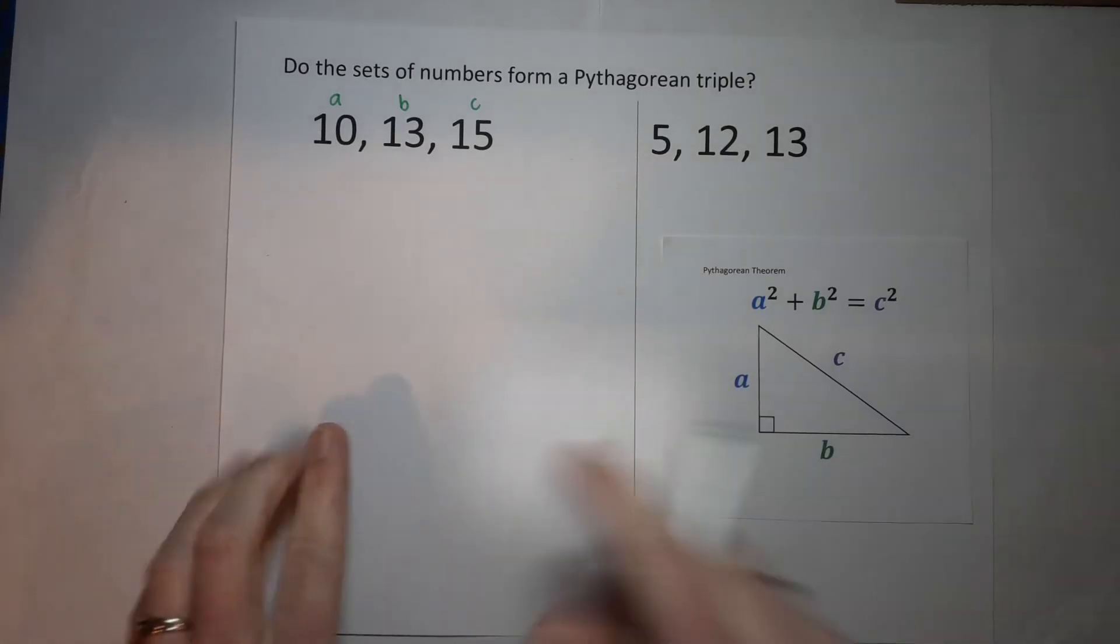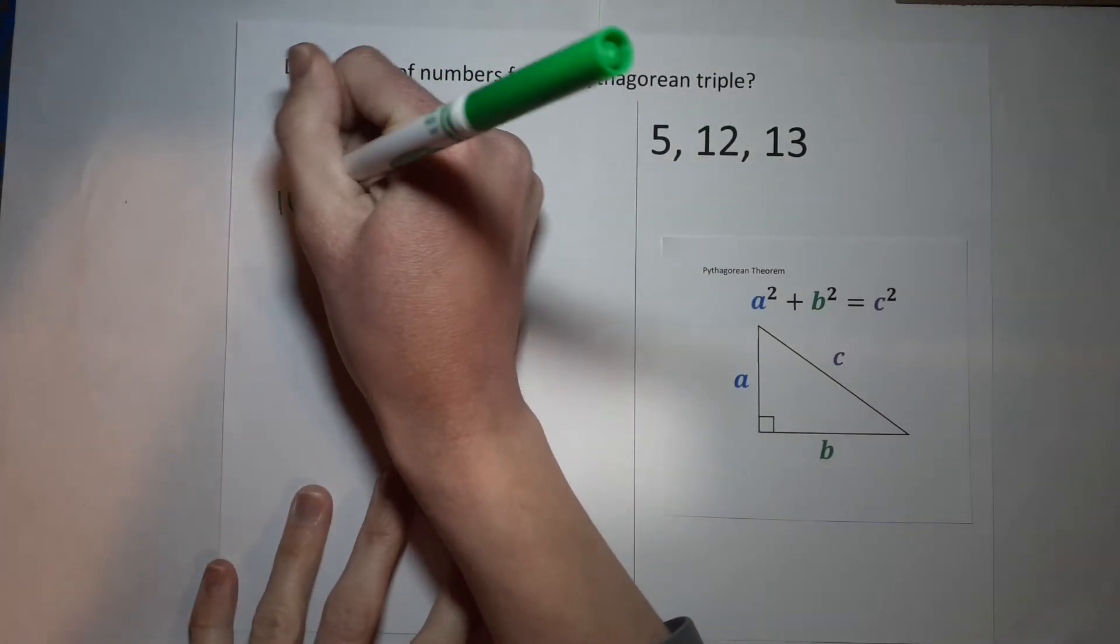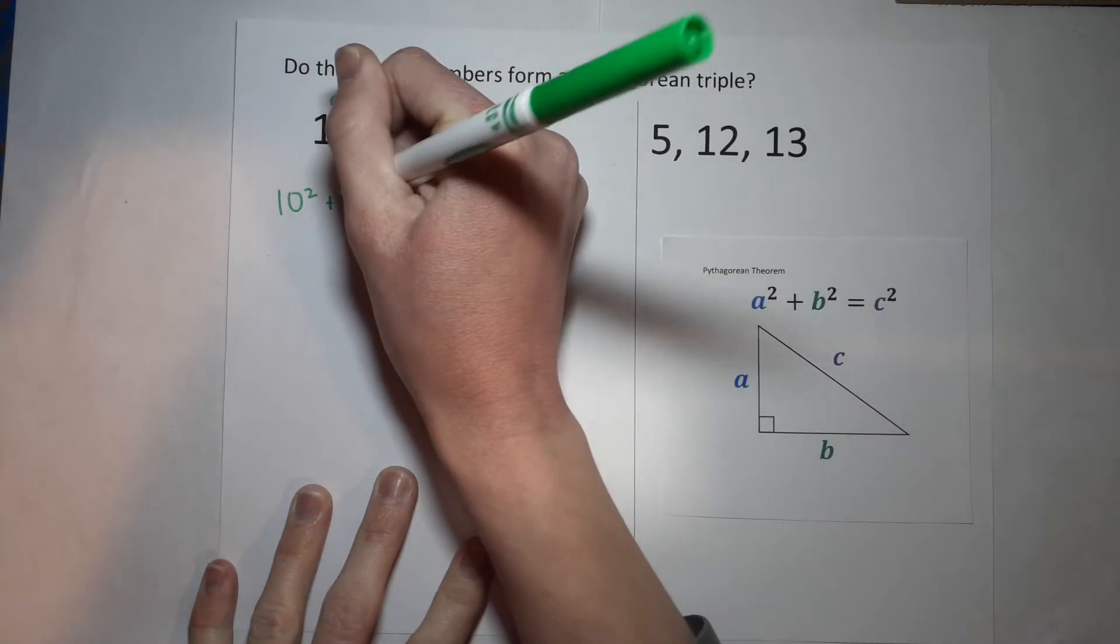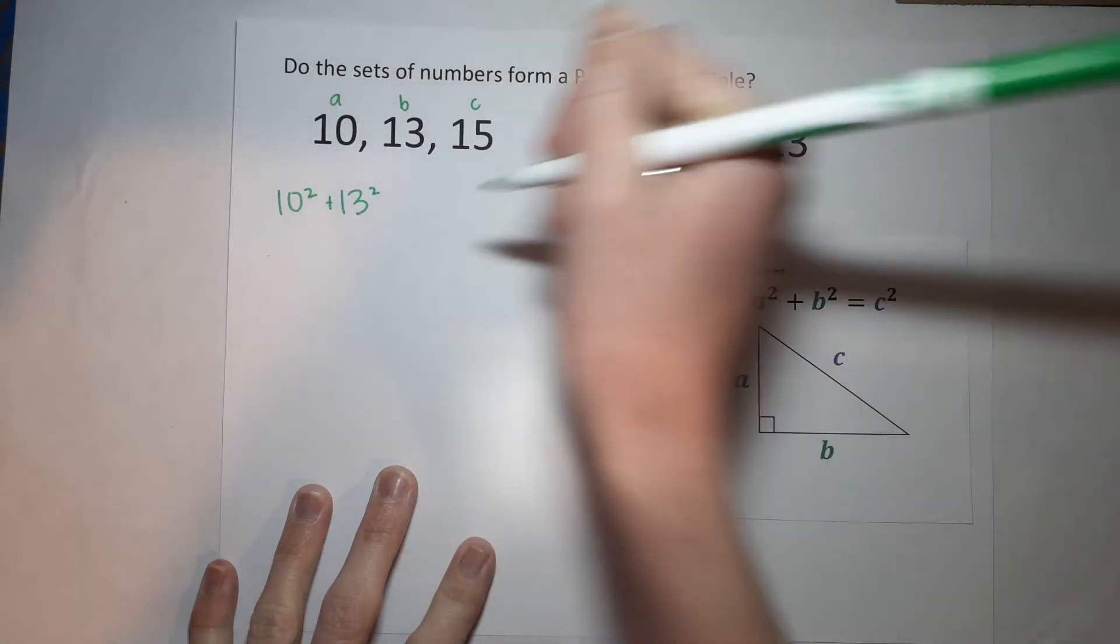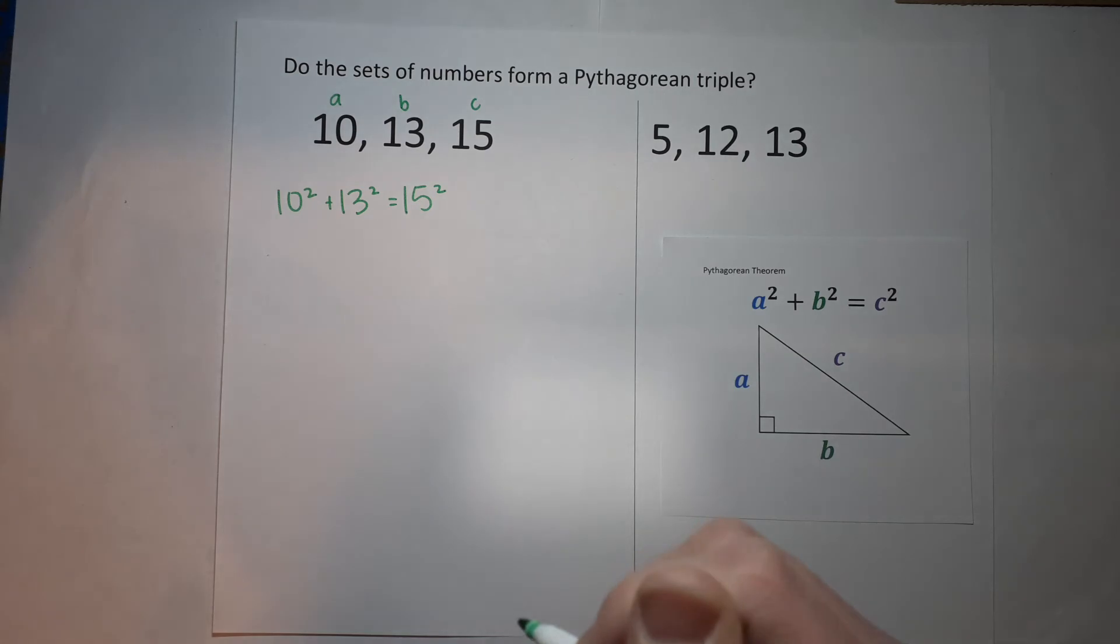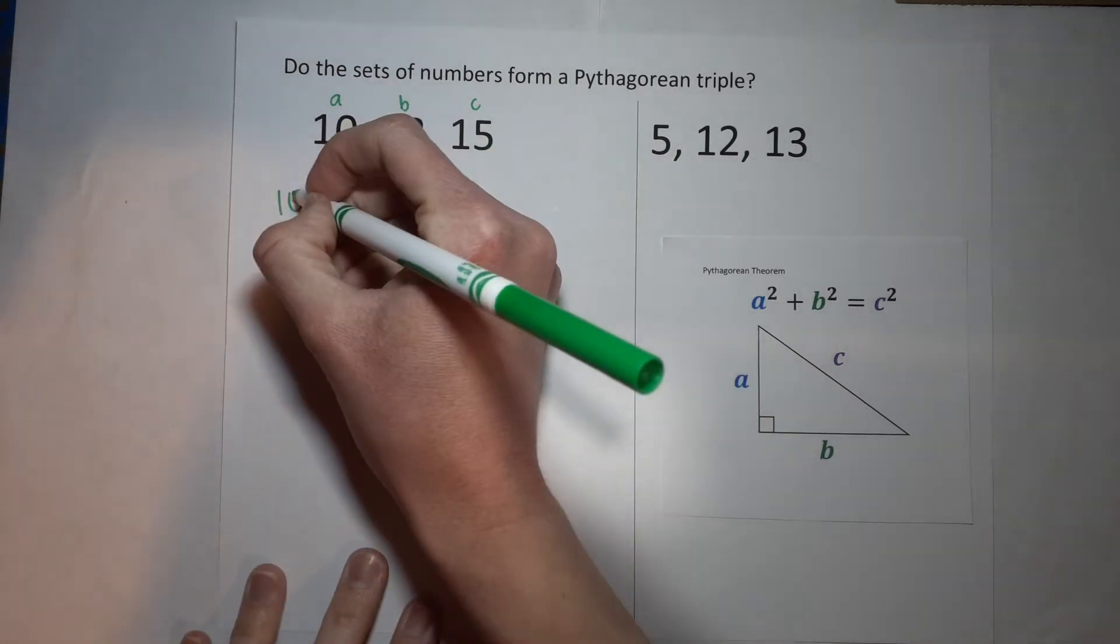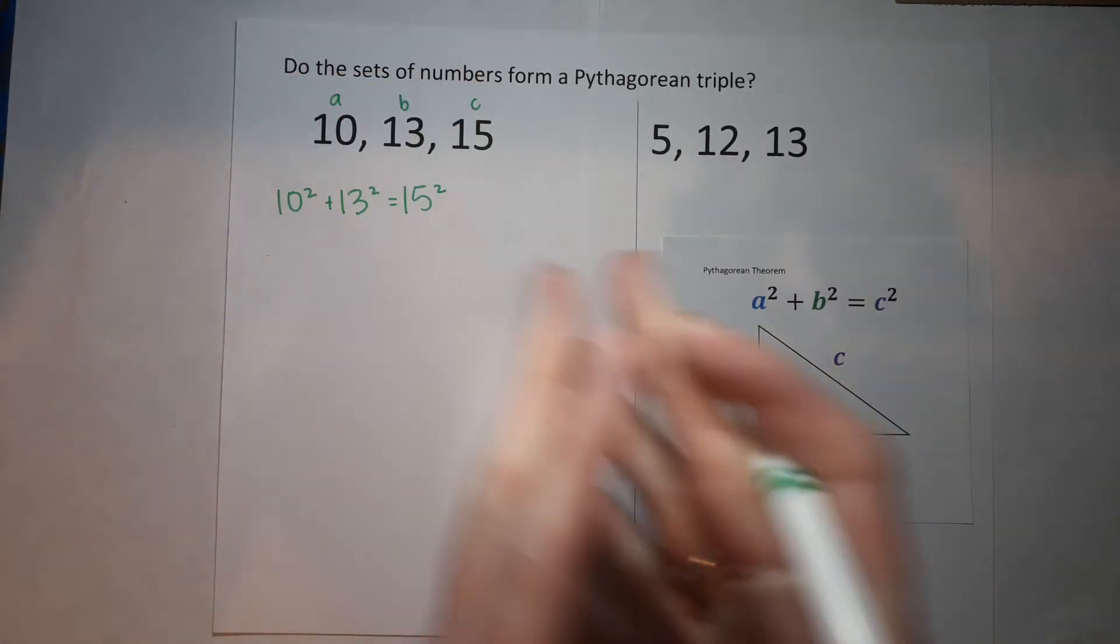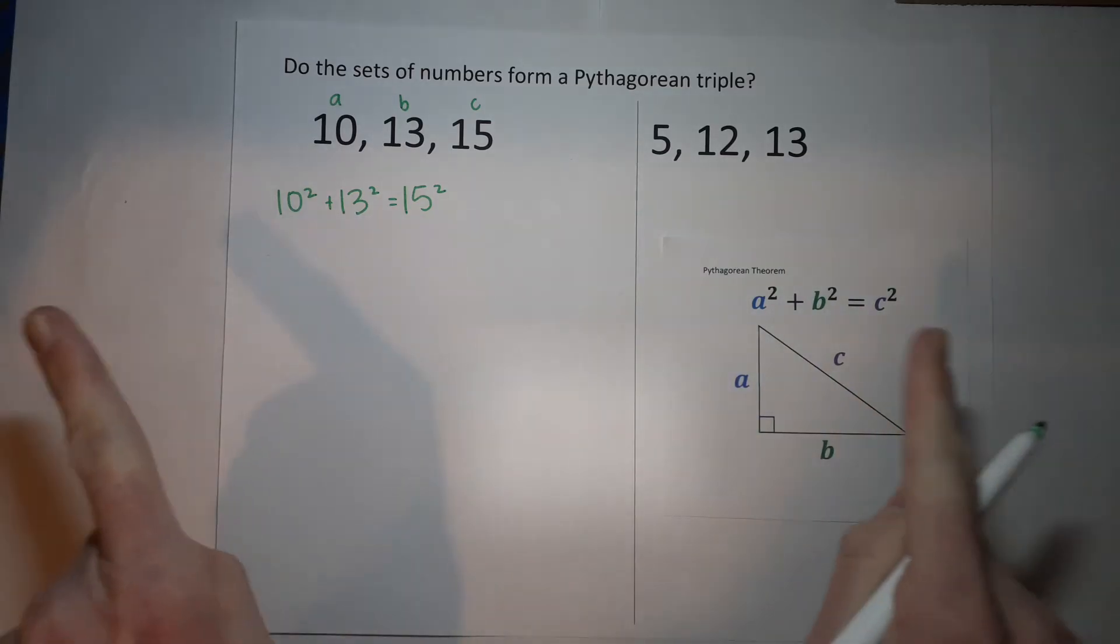So I'm going to set this up: 10² + 13² = 15². And then we go from there. 10² is 10 times 10, so it's not 20—that's 10 times 2. 10² is 10 times 10, which gives me 100.